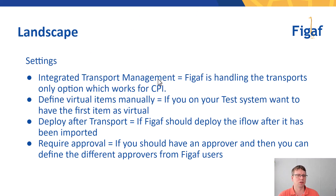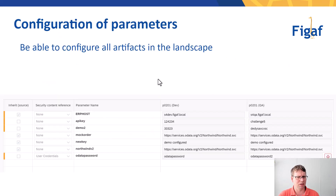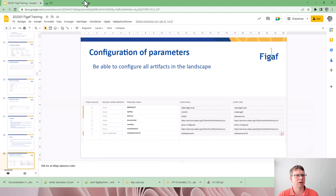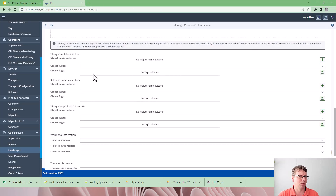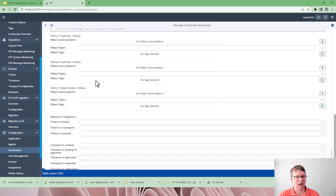We also have some different options — for Integration Suite or from PI support, connecting with SAP's Transport Management. For here we only have the 'deploy after transport' option, and 'require approvals' for review during transport. We also have some options with tags, where you can say only specific tags on objects should be transported — this can greatly increase flexibility, allowing you to create a landscape that only transports artifacts for a certain client.